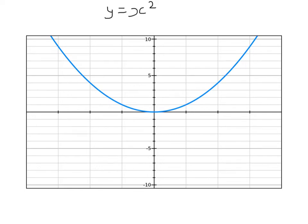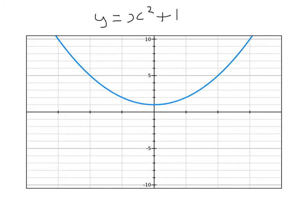Here's the graph of y equals x squared, which you should be familiar with. And here's the graph of y equals x squared plus 1. You can see it's very similar to the graph of y equals x squared, but every y coordinate is now one more than it was.